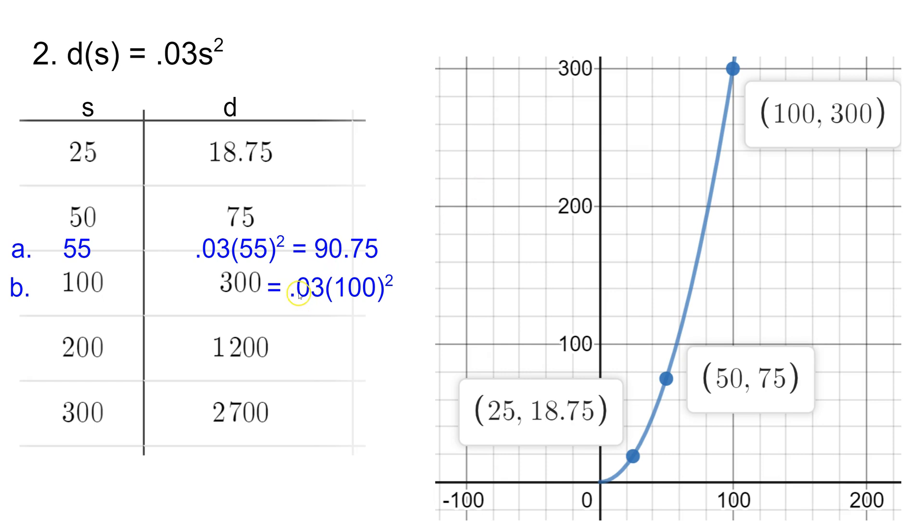And that came from substituting 0.03 times 100 squared to get 300, and in the previous question we just did 0.03 times 55 squared, doing the squaring first based on order of operations. And that's all based off this function rule at the top; we're just substituting in for these questions.